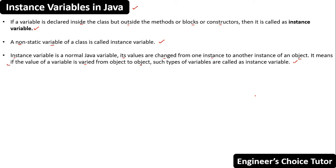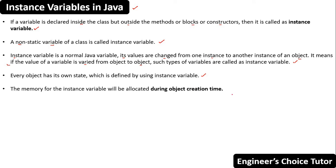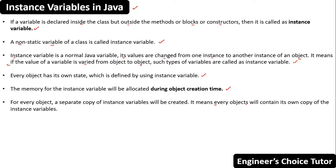We have already seen that an object has its state and behavior. The state of an object is defined by using instance variables. The memory for the instance variable will be allocated during object creation time. And for every object, a separate copy of instance variables will be created — every object will contain its own copy of instance variables.